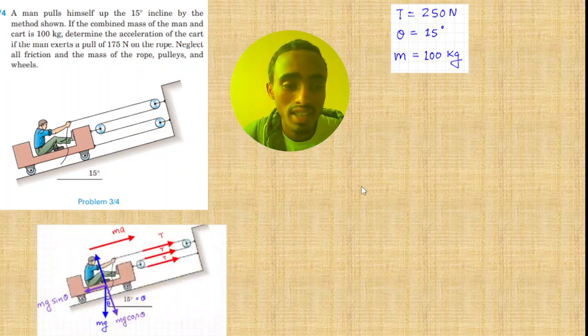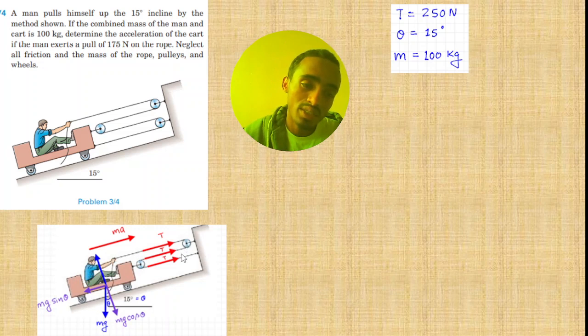So we can simplify the given equation. As you can see, the man pulls the rope in this direction, then this direction has three tensions: mg cos theta, mg, and mg sin theta in this direction.